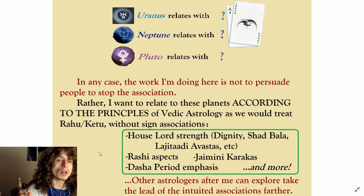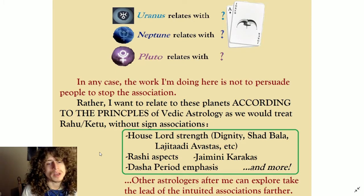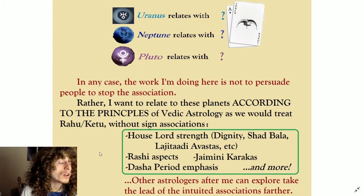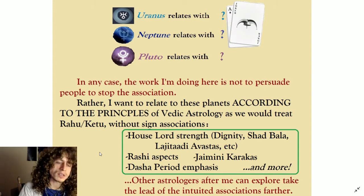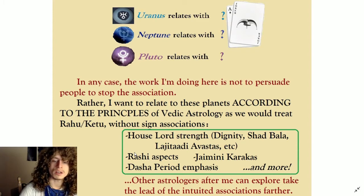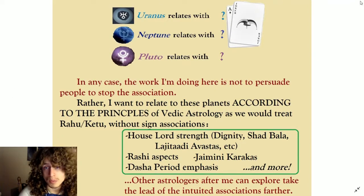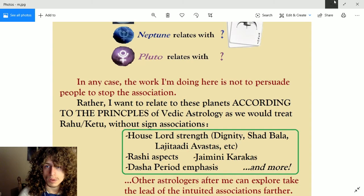I'm talking about all of this and I haven't mentioned how Uranus relates with Aquarius or how Neptune relates with Pisces because, for me, I don't really need to. I could, and eventually maybe that's where my mind is going to go. But first, in order to plainly and clearly talk about these planets in the Vedic sense, I'm going to cut their associations with those signs. And then other astrologers after me can explore and take the lead of these associations farther.